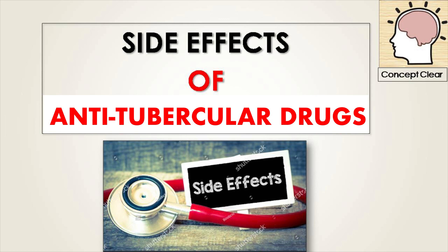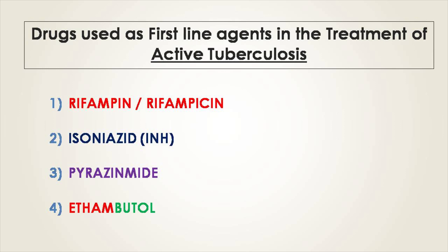Today we are going to talk about the side effects of anti-tubercular drugs, particularly the side effects of those drugs used as first-line agents in the treatment of active tuberculosis. The first-line drugs include rifampicin (also called rifampin), isoniazid, pyrazinamide, and ethambutol.